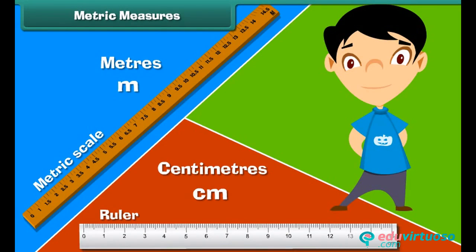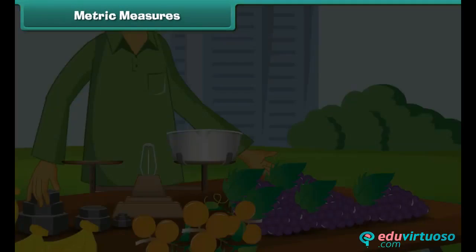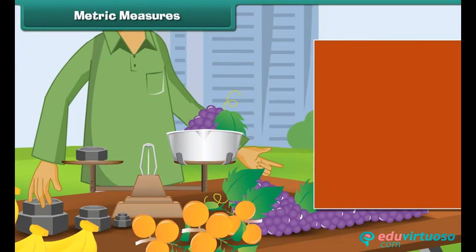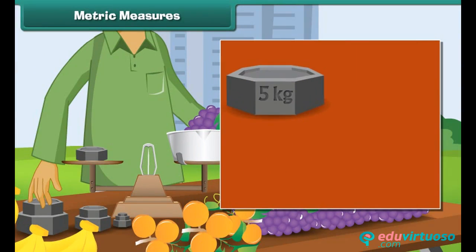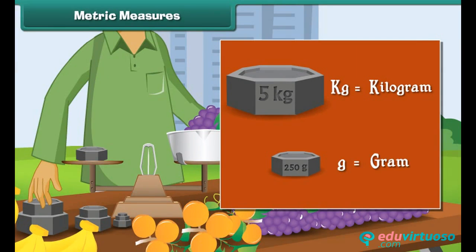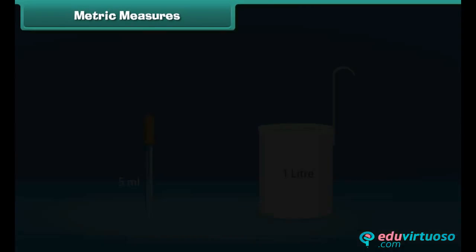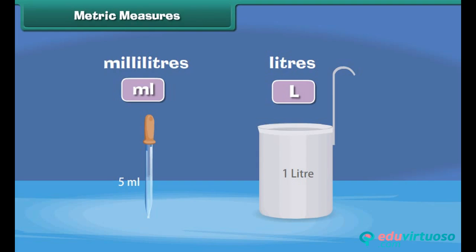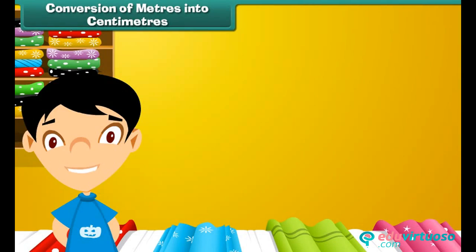Metric measures: Meter is represented by M, and centimeter by CM. The weight of an object is measured in grams and kilograms. The symbol kg represents kilogram, while the symbol g represents gram. Capacity is measured in liters and milliliters. L represents liter and mL represents milliliter.